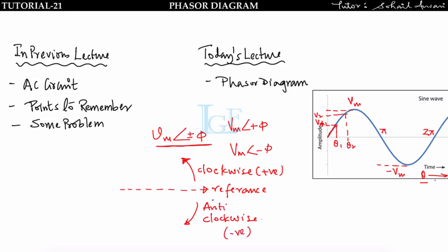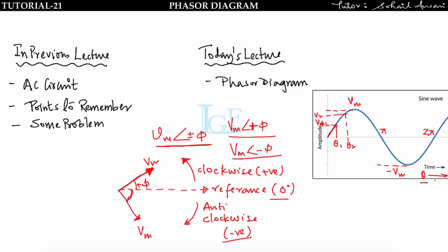Taking the x-axis as the reference (0° phasor), to draw Vm∠+φ we move clockwise — the phasor length defines magnitude Vm and the angle is +φ. To draw Vm∠−φ, we move anti-clockwise with respect to the reference. In this way we can represent any sine wave in terms of magnitude with some angle, known as phase.